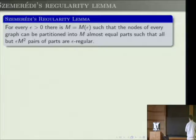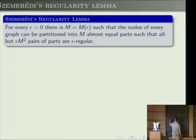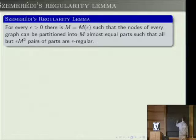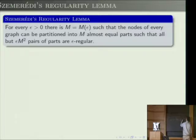Let me define epsilon-regularity. If you have two vertex subsets X and Y of your graph, you define the density between X and Y as the number of edges with one endpoint in X and the other in Y, divided by |X|·|Y|—so it's the fraction of pairs in X×Y that are edges.